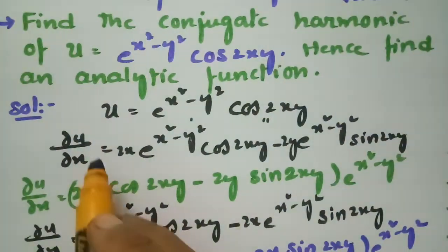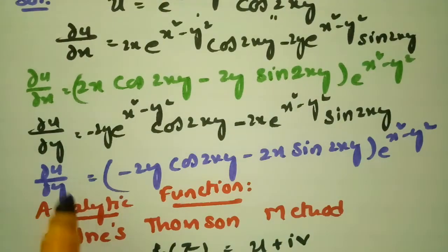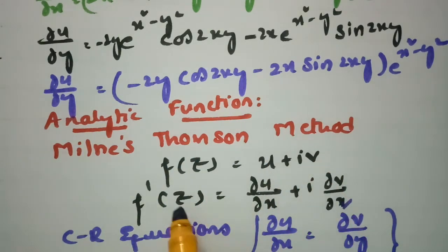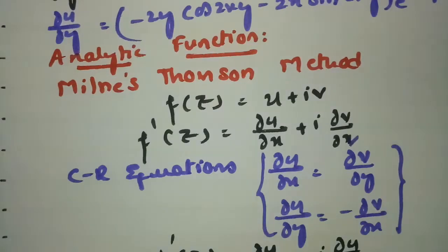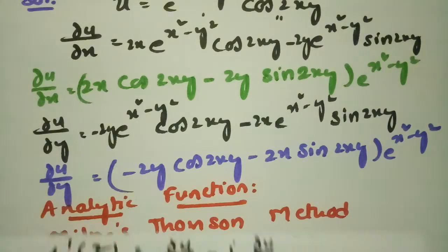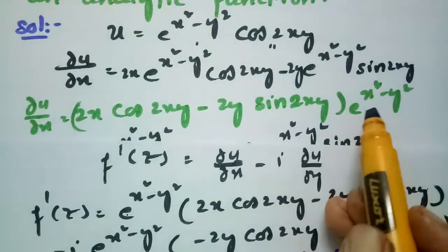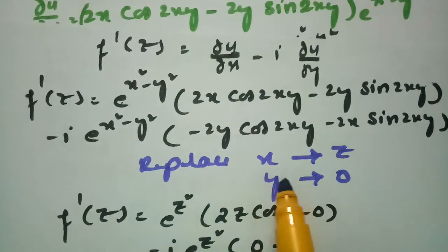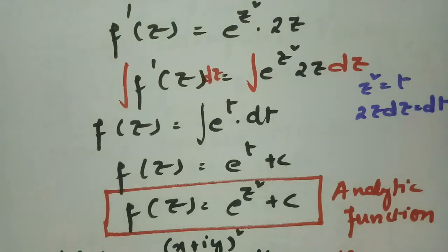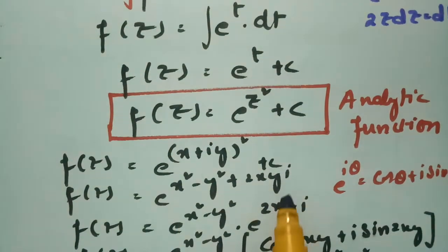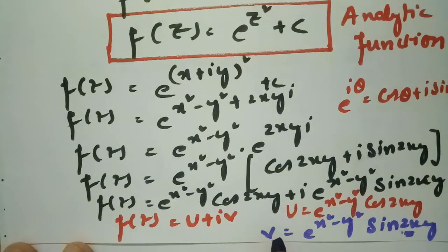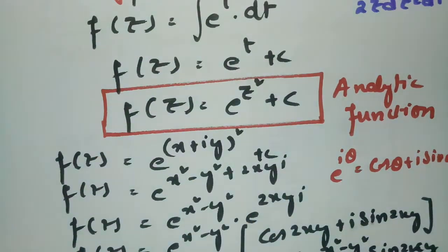To summarize: u was given, so first I computed ∂u/∂x and ∂u/∂y. For the analytic function I used Milne's Thompson method: f'(z) = ∂u/∂x − i·∂u/∂y, substituted the derivatives, replaced x by z and y by 0, and integrated to get f(z) = e^(z²) + c. Expanding using z = x+iy gave both the real part u and the harmonic conjugate v = e^(x²-y²)·sin(2xy).